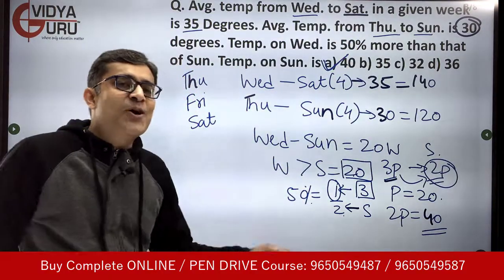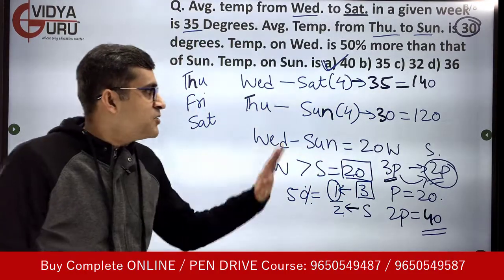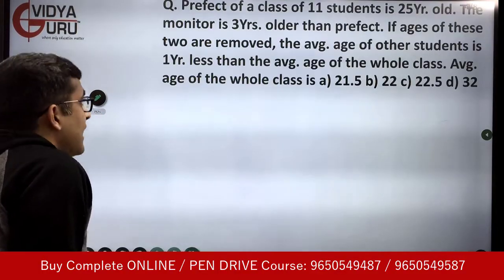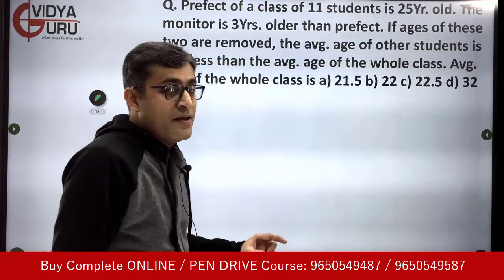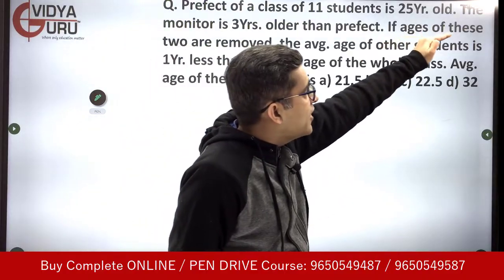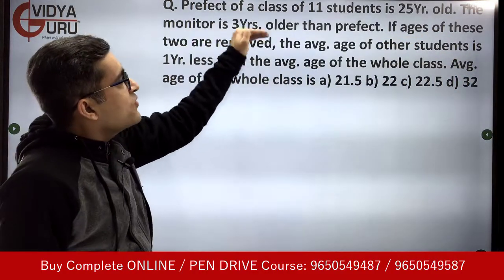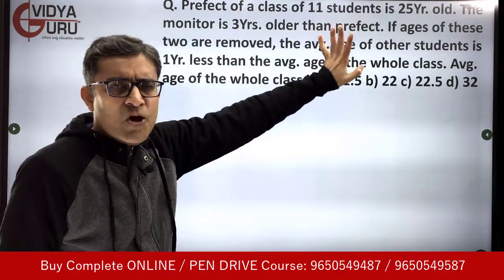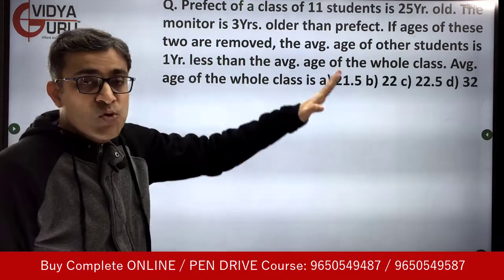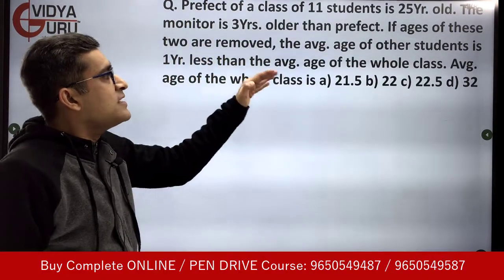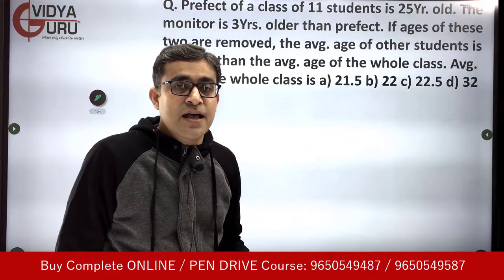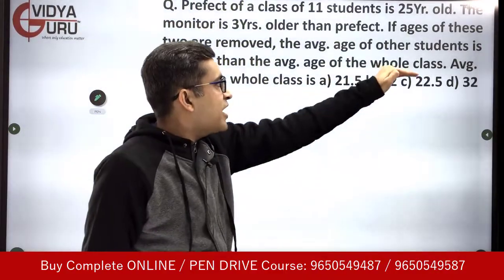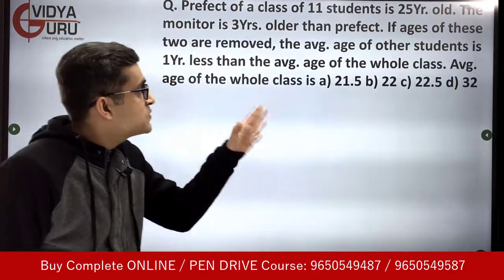The answer is 40 degrees. That's how you calculate these seemingly difficult questions — no x, no y, no variables. Now let's look at the final question for today, another wonderful one. The prefect of a class of 11 students is 25 years old. The monitor is 3 years older than the prefect. If the ages of these two are removed, the average age of the other students is 1 year less than the average age of the whole class. Find the average age of the whole class.